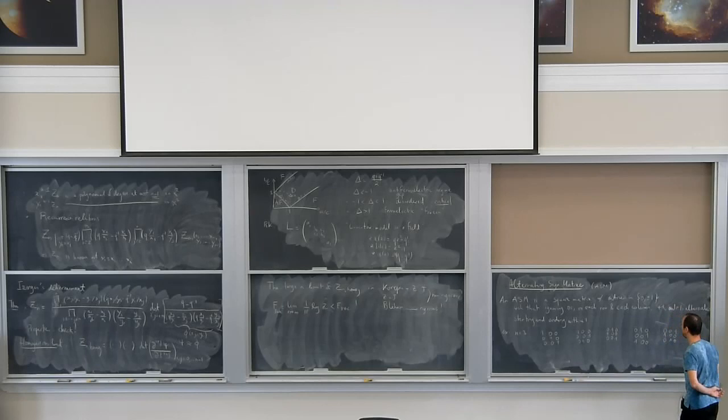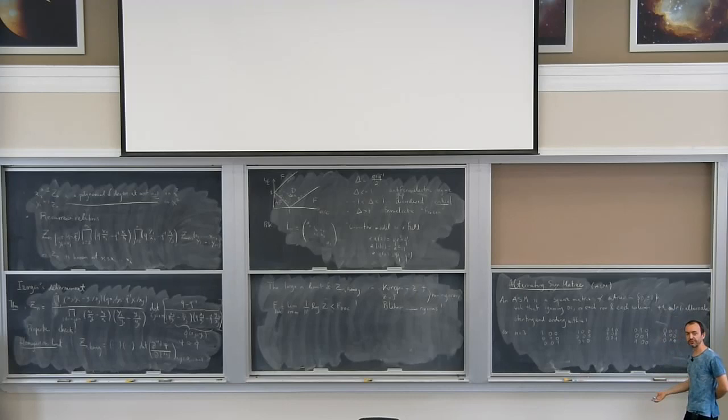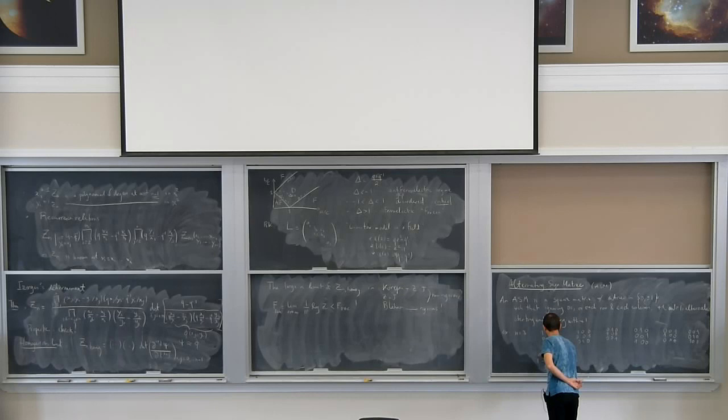The only non-trivial case for n equals three is the matrix that has a single minus one — it's the one with a minus one in the middle. You have an alternation of one, minus one, one. So there are seven ASMs of size three in total. There is a long history associated to this problem — this is the story of the alternating sign matrix conjecture, about which there is a book written by Bressoud.